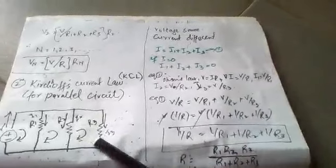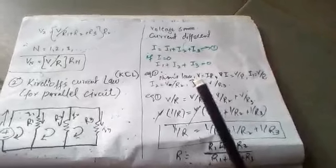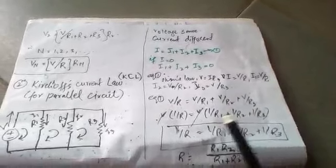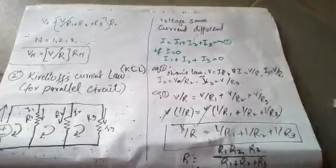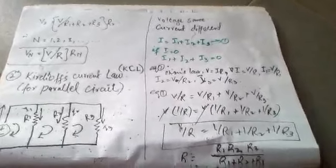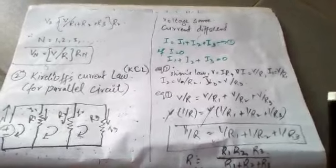Okay, so I have a sketch of Kirchhoff's current law. Kirchhoff's current law states that the sum of all the currents leaving a node is equal to zero. Or equivalently, the sum of all currents entering a node is equal to the sum of all currents leaving the node.